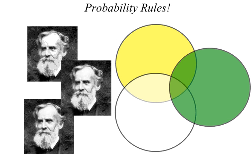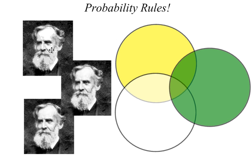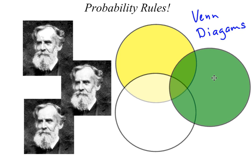This guy over here — his name is John Venn — and he lived a long time ago. He came up with the idea of drawing Venn diagrams and named them after himself. That's when you draw a series of circles that have some areas that overlap.